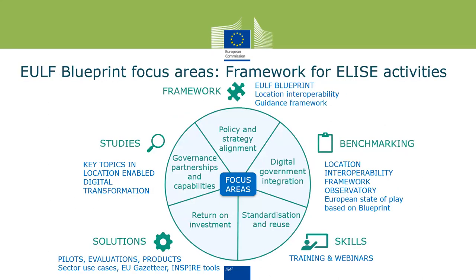Going into a little more detail, the five focus areas of the blueprint are: Policy and Strategy Alignment, Digital Government Integration, Standardisation and Reuse, Return on Investment, and Governance, Partnerships and Capabilities. These all frame ELISA's activities, where we undertake benchmarking, provide guidance, run knowledge transfer activities, develop studies on particular topics in these areas, and develop solutions testing out principles and applying the good practices in the framework.